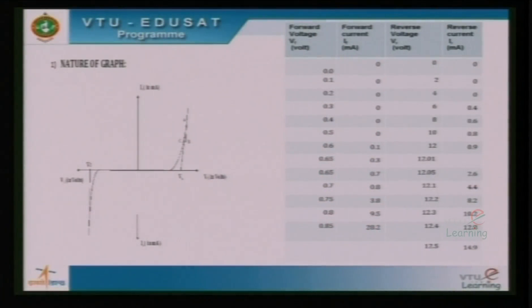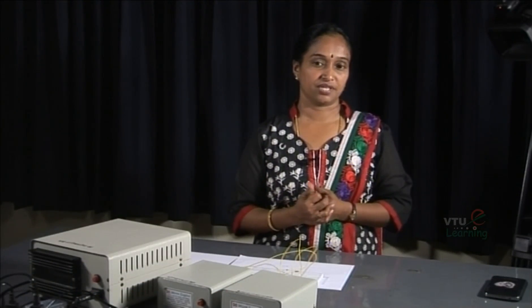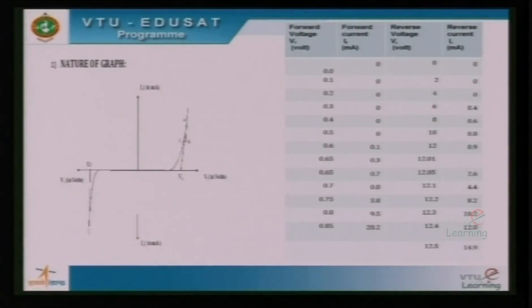You find the sharp increase in the value of current through the circuit which is increasing from 2.6 to 14 or 15 milliamps whereas the voltage variation is very small 12 to 12.5 volts. This is depicted in the graph wherein you can see that a sharp increase in the value of current and this particular voltage is referred as zener breakdown voltage.